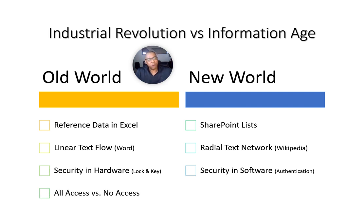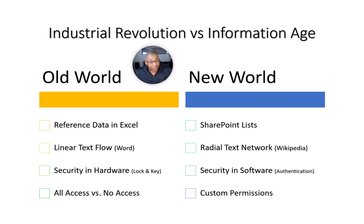In the old world, security was either full access — you have the key, you're in — or no access, completely locked out. In the new world it's not either/or — it's custom permissions. I can say you have permission to come into my house but not to open my refrigerator, and you can't go upstairs. In the old world if I gave you my key, you had access to everything: refrigerator, upstairs, every room. Now it's custom.